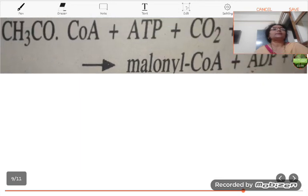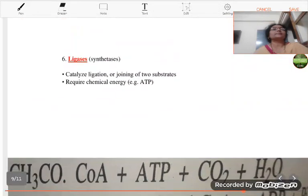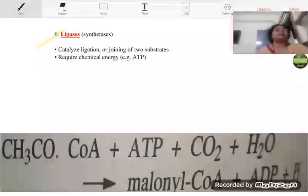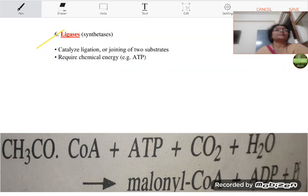The last class of the enzyme is ligases which are also known as synthetases. They catalyze ligation or joining of two substrates and for this they require chemical energy in the form of ATP. The acetyl coenzyme A in the presence of ATP forms the malonyl coenzyme A.